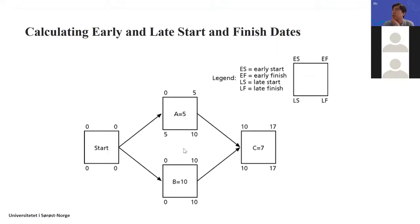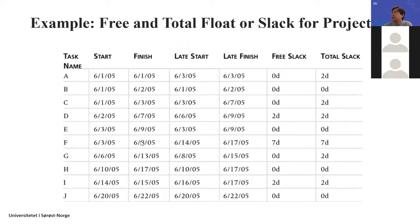As part of the critical path analysis, you can also draw a box for each activity with four corners representing early start, early finish, late start, and late finish. This shows the flexibility for each task. You can also view the free float and total float time available for each activity.